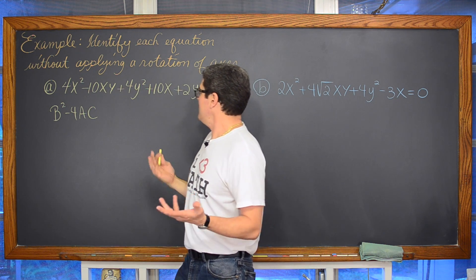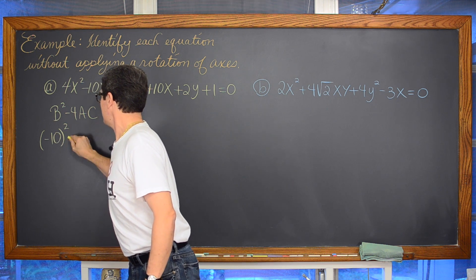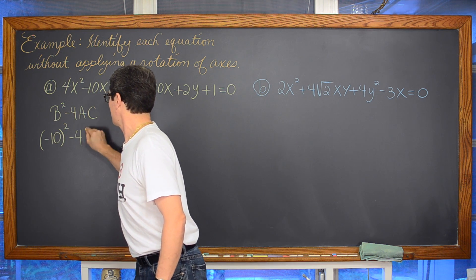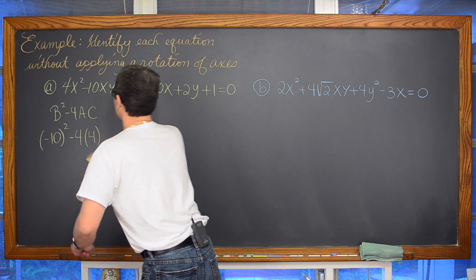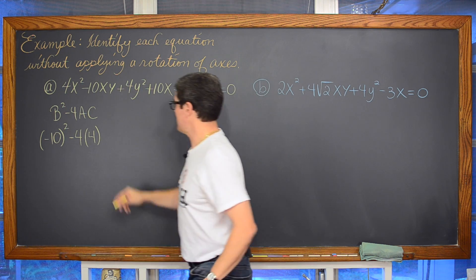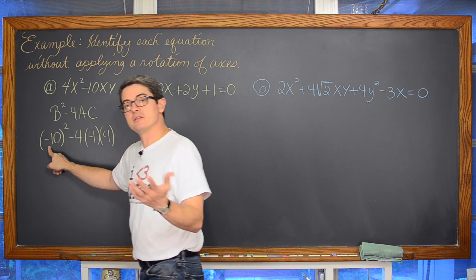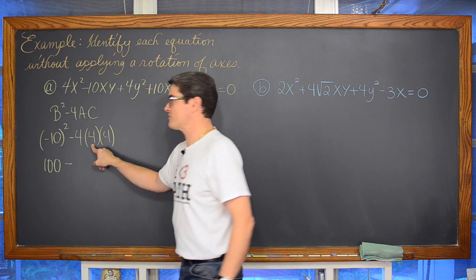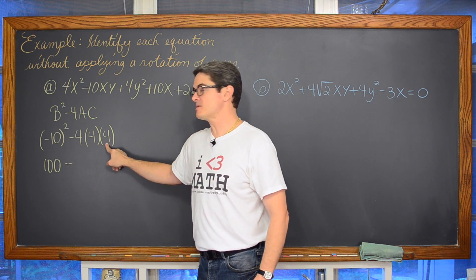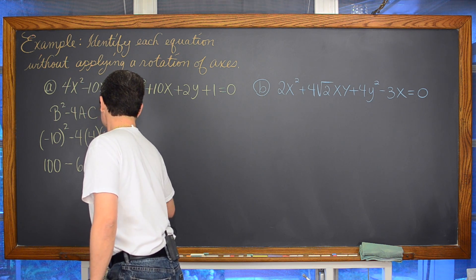We're going to do negative 10 squared minus 4 times a, which is equal to 4, times c, which is also equal to 4. That's going to be negative 10 squared, negative 10 times 10 is 100. Minus 4 times 4 is 16, and 16 times 4 is 64. And that comes out to be 36.